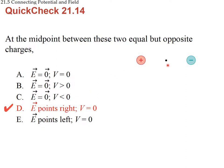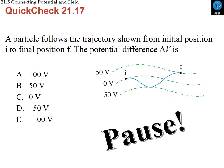Since both charges produce fields pointing right, the field at the center is nonzero and points to the right. For the potential: the contribution is kQ/r from the positive charge plus k(−Q)/r from the negative charge — they are exactly equal and opposite, so the potential V equals zero at the center.